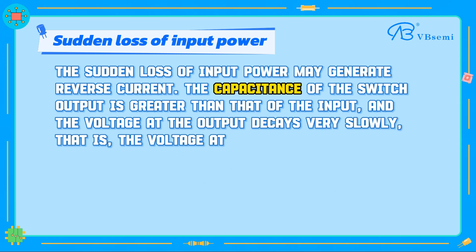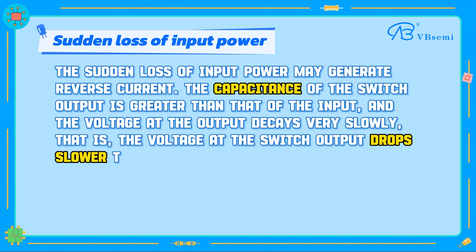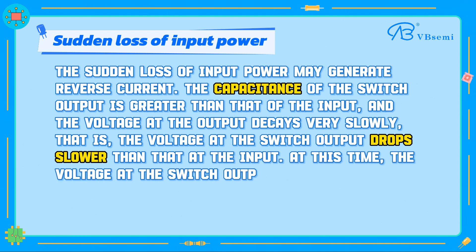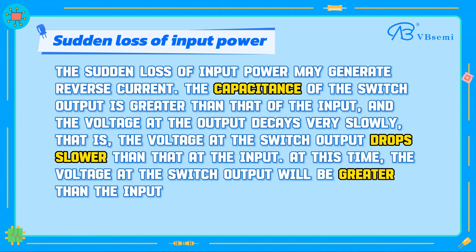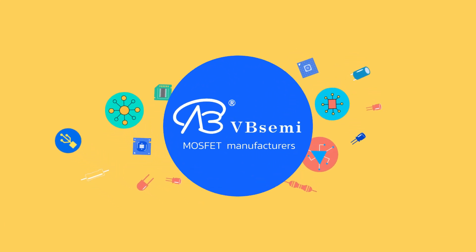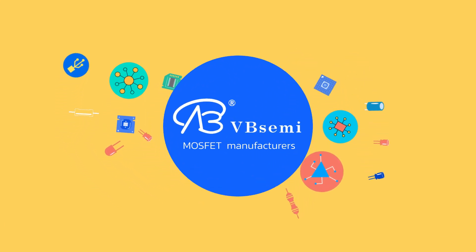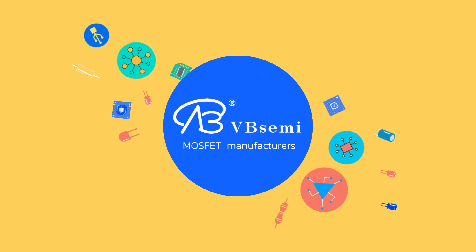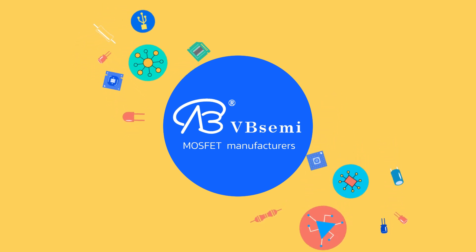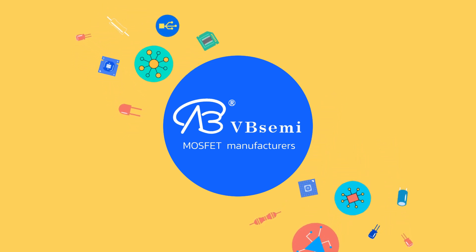That is, the voltage at the switch output drops slower than at the input. At this point, the output voltage will be greater than the input voltage, and reverse current will flow through the switch. If you have any questions about MOSFET product technical solutions, leave a message in the comments. Websemi is a MOSFET manufacturer focusing on MOSFET R&D and manufacturing for 20 years.